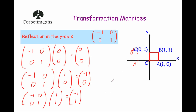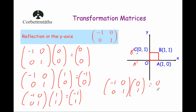And finally, the point C — hopefully it will stay where it is. So minus 1, 0, 0, 1, and when we multiply that by the point C, which is 0, 1, we get minus 1 times 0 is 0, 0 times 1 is 0, adding them together is 0. And then 0 times 0 is 0, 1 times 1 is 1, adding them together is 1. So the point C will stay where it is — that's the point C dash. And joining up, as you can see, that's a reflection in the y-axis.